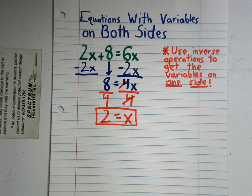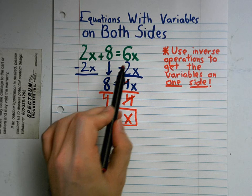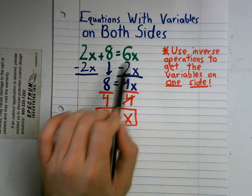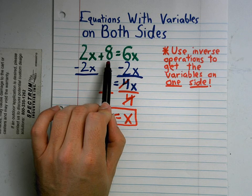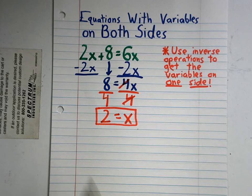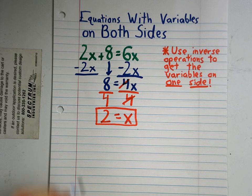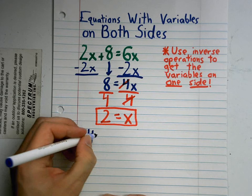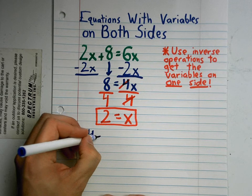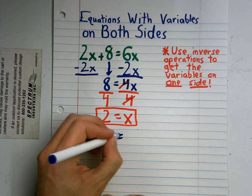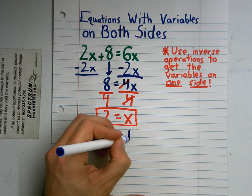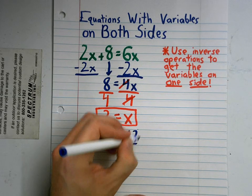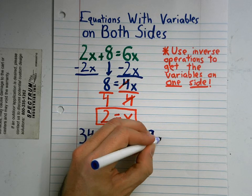Just like before, we get our variables on one side by themselves and we get the numbers — the constants, the numbers without variables — on the other side. I'm going to show you one more problem that we're going to have to add another step to. Let's say it is 34 minus 2x equals 12 plus 9x.